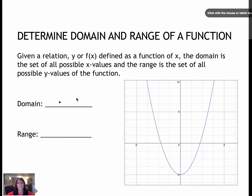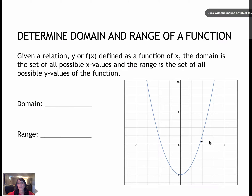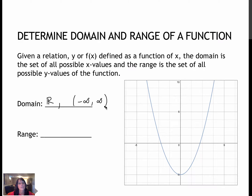Looking at the domain of this particular graph and the x-axis, I can see that I've got y values for all of these x's. I could plug in negative 100 and still end up with a y value, meaning pretty much any value I want for x I could plug in, which means the domain is all real numbers. Most often we'll write that as negative infinity to positive infinity — that's interval notation.